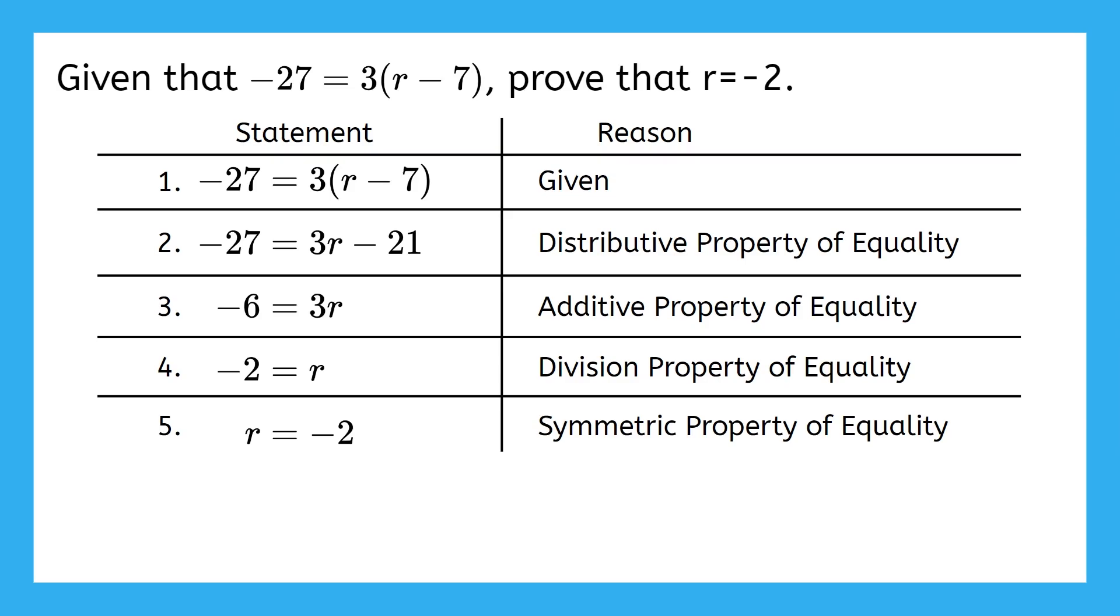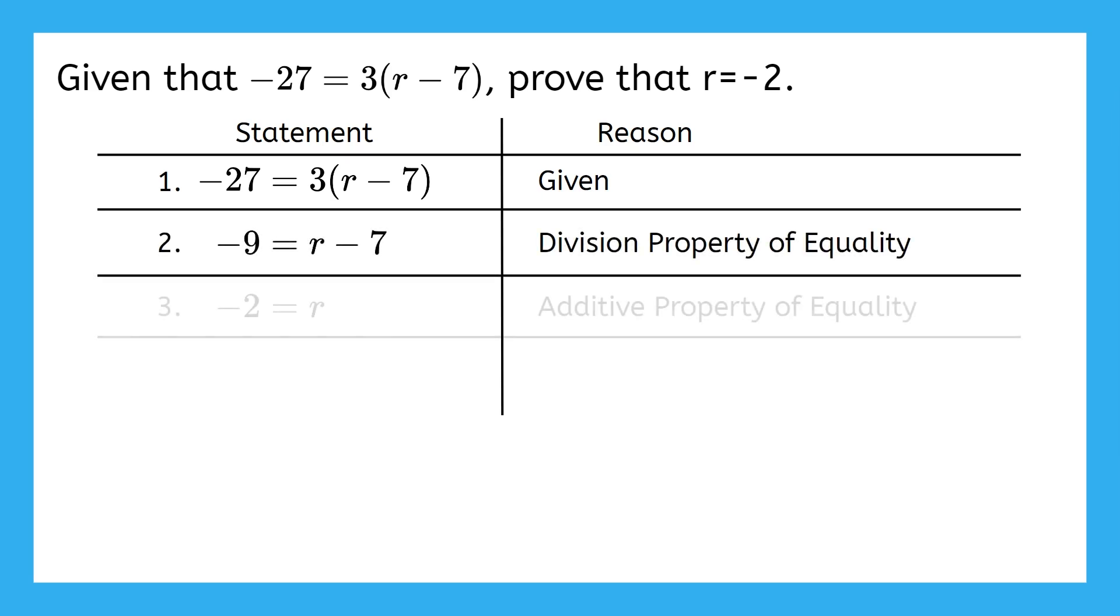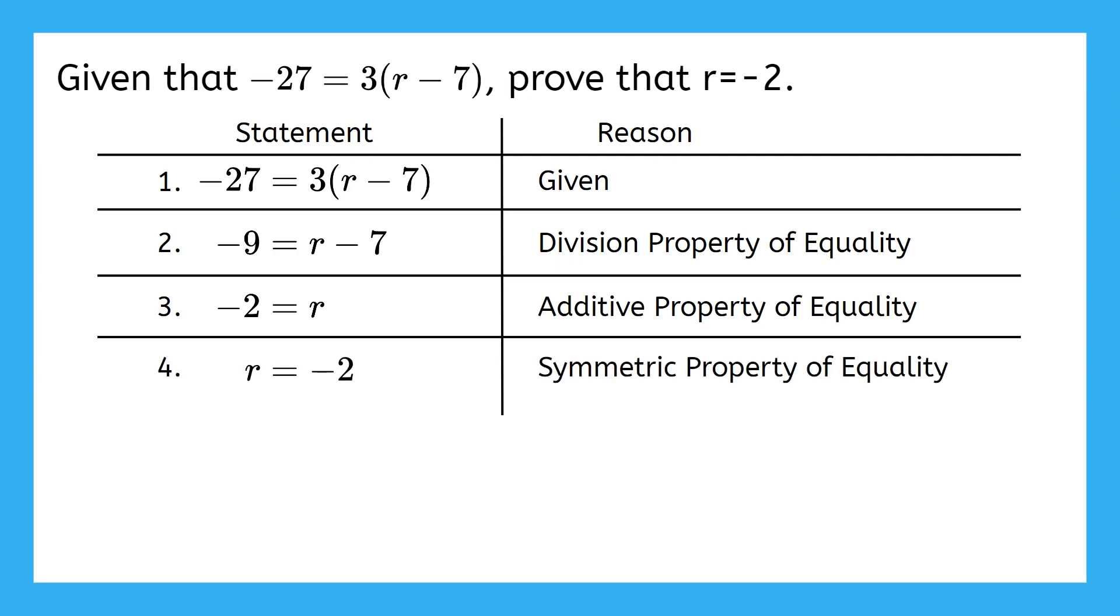It's possible that you solved this equation differently than I did. And that means that your proof might look different. That's totally okay. For example, maybe instead of distributing 3 at the beginning, you could have divided both sides by 3 to start. Then you wouldn't need the distributive property of equality at all, and your proof could be only 4 lines instead of 5.